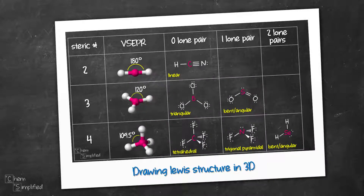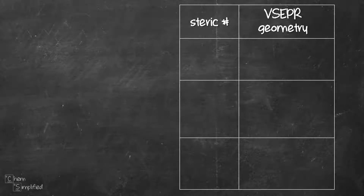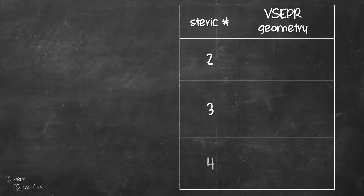In this video, we're going to draw Lewis structures in three-dimensional following the VSEPR theory. We will focus on drawing structures with steric number 2, 3, and 4.